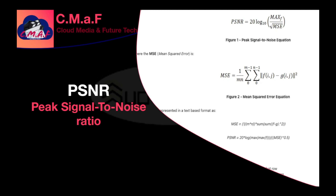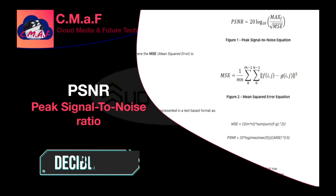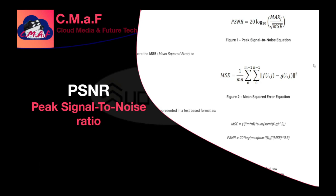PSNR is usually expressed in terms of a logarithmic decibel scale. In some instances, PSNR provides a better estimation than VMAF and SSIM — this happens when the video has undergone significant compression. However, as explained, PSNR mostly works on mathematical equations and lacks the ability to capture the perceived video quality as experienced by an audience.